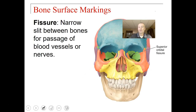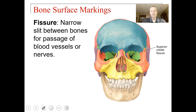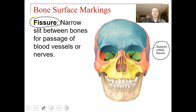Each bone you will learn has different named parts. I want to go over bone surface markings with you and describe what these parts mean, so that when you learn, for example, superior orbital fissure, you'll know what a fissure is. Superior indicates it's higher, orbital is around the orbit of the eye, and fissure means a narrow slit between the bones.